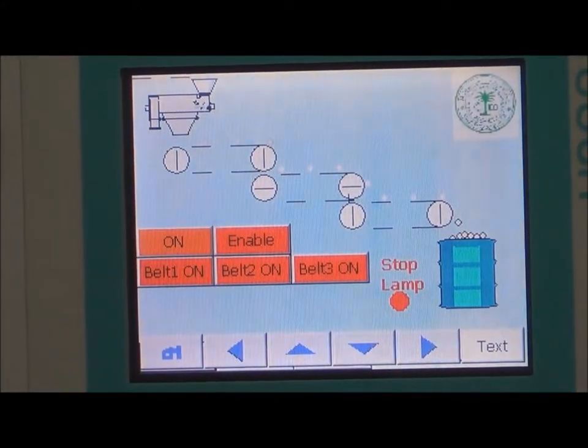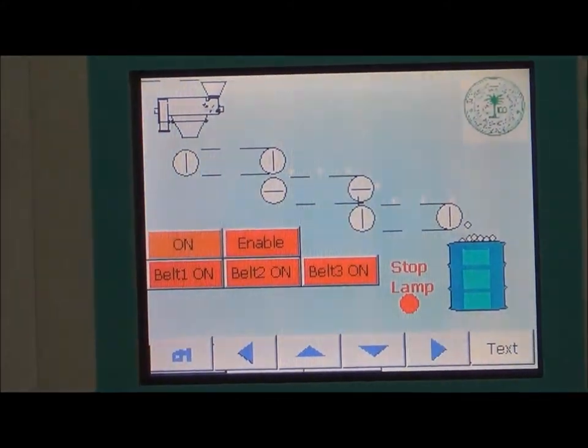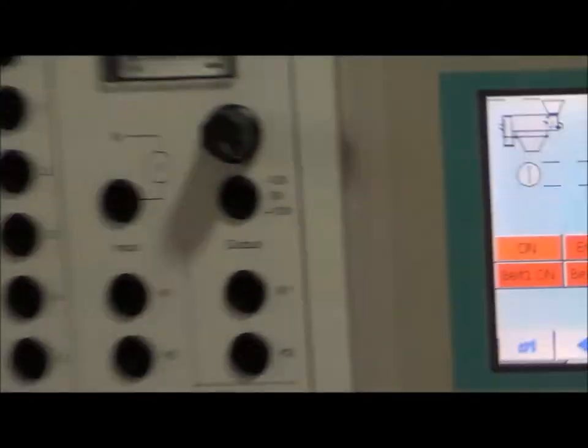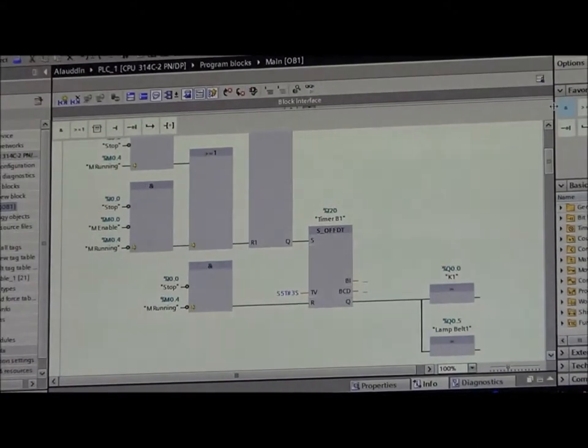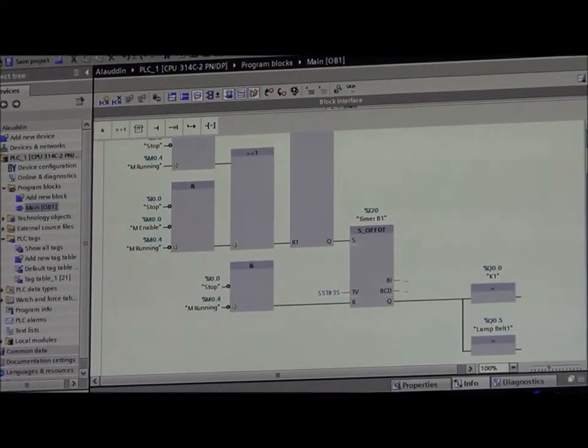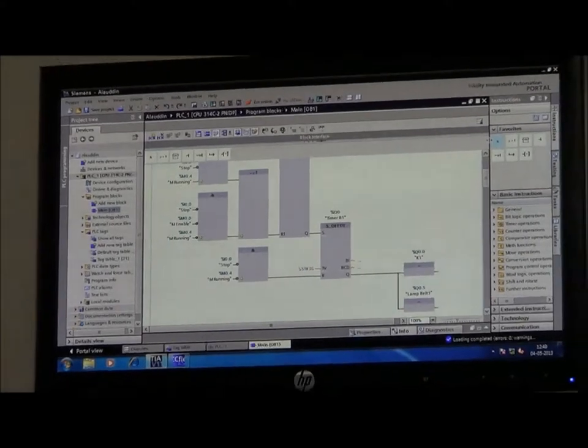Now let's move towards the functional description of the program. Here the belt is started in a particular sequence. At first belt 3 is started, then belt 2 and then finally we move on to belt 1.